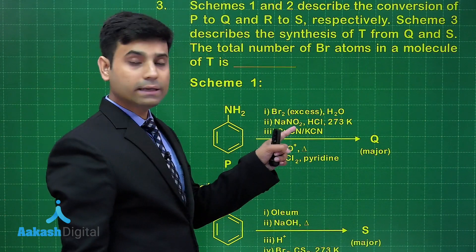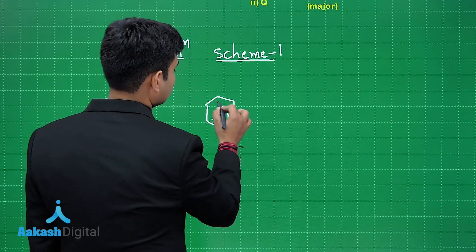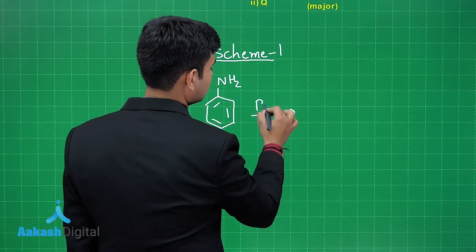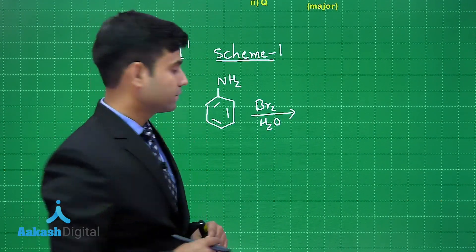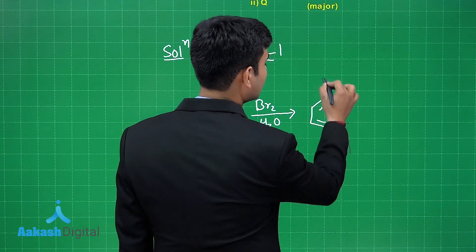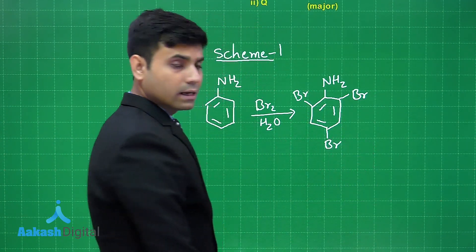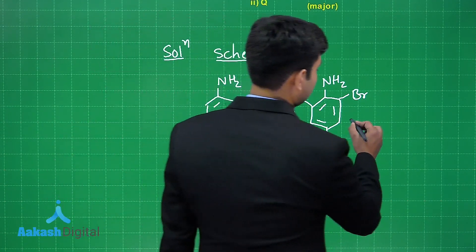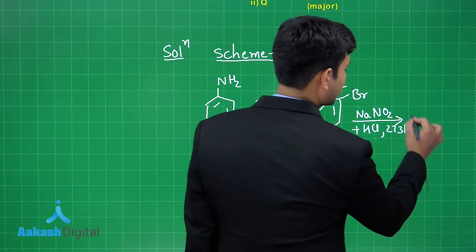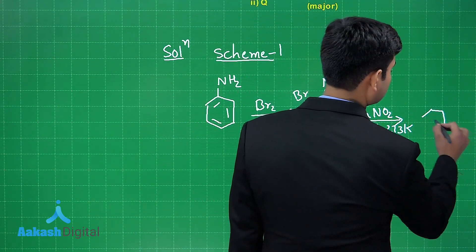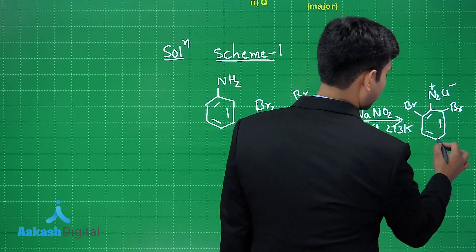In Scheme 1 we have aniline, which reacts with bromine water in excess. Since bromine water is in excess, all ortho and para positions will be substituted with bromine — this gives 2,4,6-tribromoaniline. In the second step, NaNO2 reacts with HCl at 273 Kelvin — diazotization takes place — and the diazonium salt is formed with N2⁺Cl⁻, with bromine substituents at the ring.